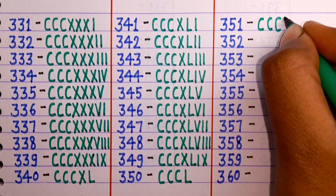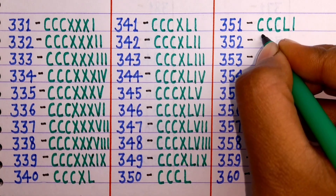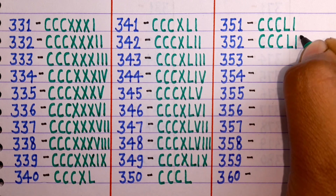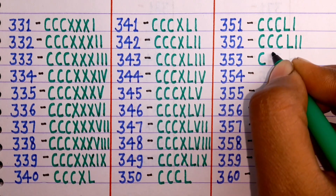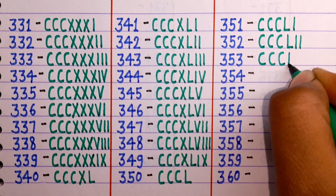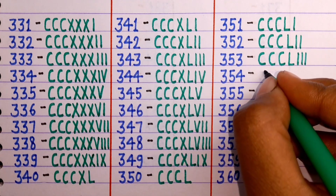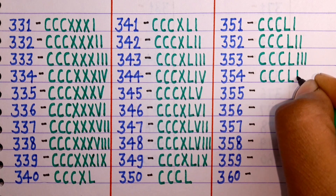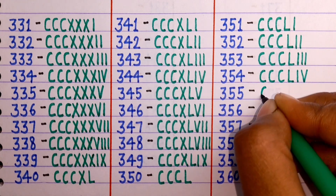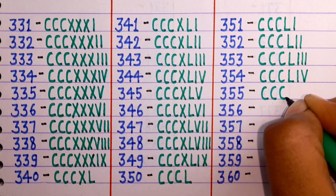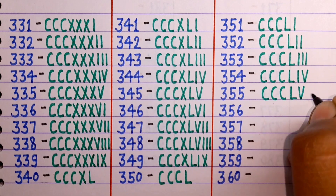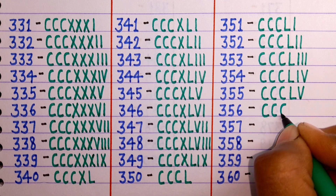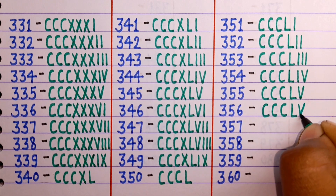351 is CCCLI. 352 is CCCLII. 353 is CCCLIII. 354 is CCCLIV. 355 is CCCLV. 356 is CCCLVI.